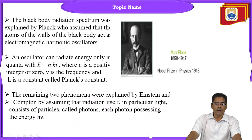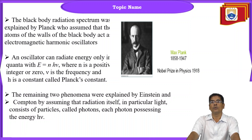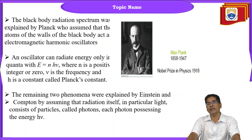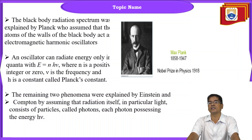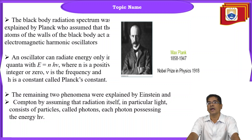So an oscillator can radiate energy only in quantized energy, given by E equals N h nu, where N is a positive integer, nu is frequency, and h is Planck's constant.